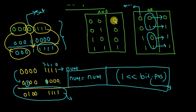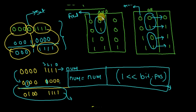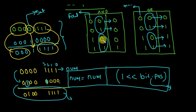Now let's look at AND. No matter what the input is, if I AND with zero, the result is always zero. And no matter what the input is, if I AND with one, the result is always the original number.